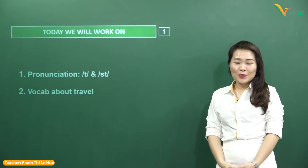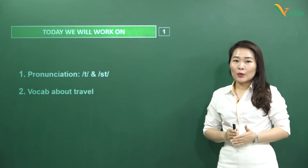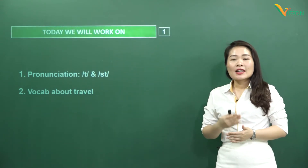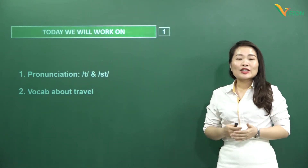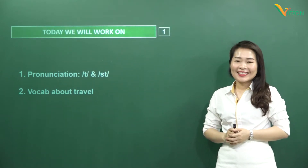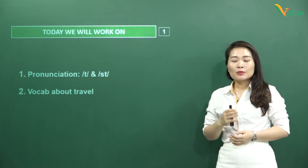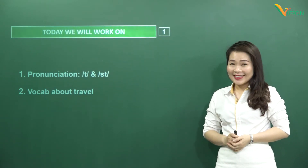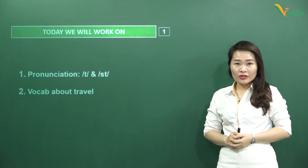This is the first lesson of Unit 5. Next, we will continue to get familiar with vocabulary related to the topic of travel and Unit 5 — Natural Wonders of the World.